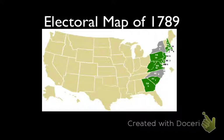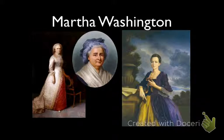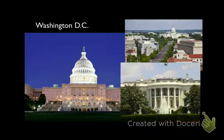Here's the electoral map — all the green shows the states that voted for Washington through the Electoral College. New York and North Carolina didn't vote at the time, but he had all the electoral votes to win the election in 1789. This is a picture of Martha Washington — you can see she's a very rich, prominent woman with a lot of money when Washington marries her, and she has two children of her own from a previous marriage. Here is Washington, D.C. — the White House was actually burnt down in 1812, so this is a revision of it. Washington had a huge input on how he wanted Washington, D.C. to look.